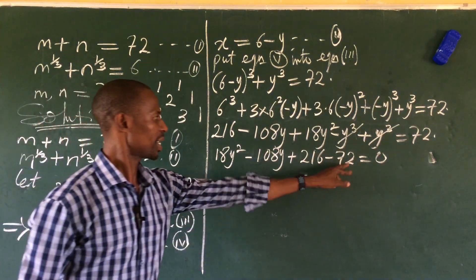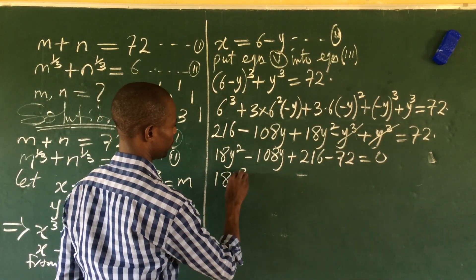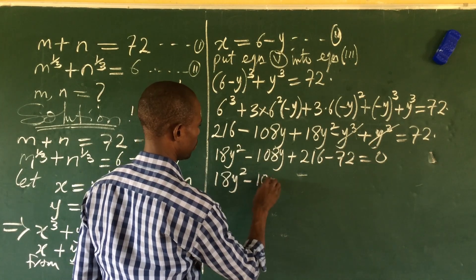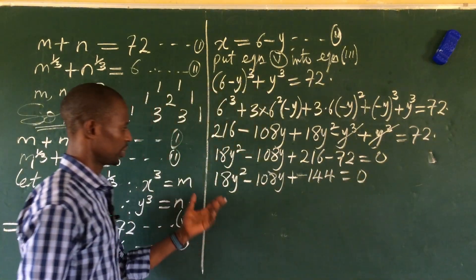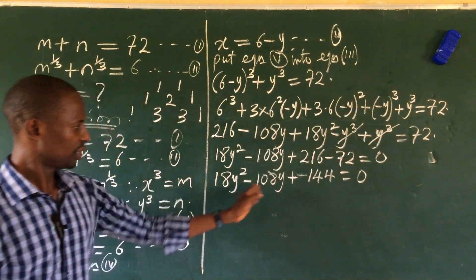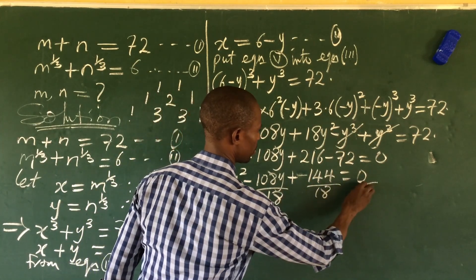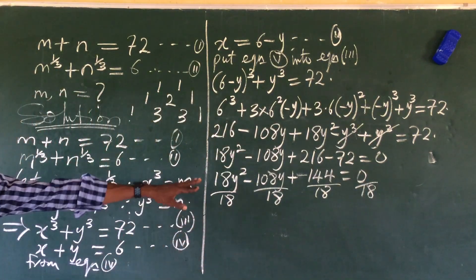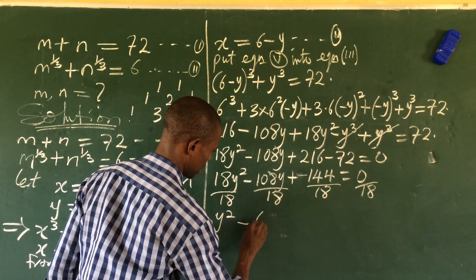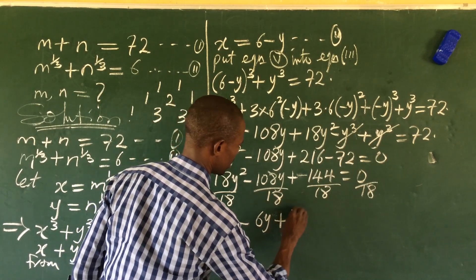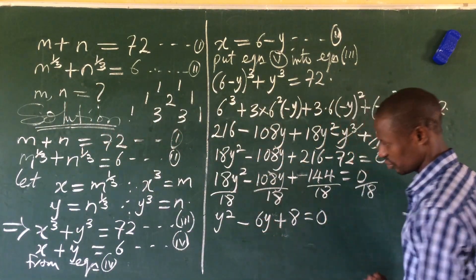Dividing through by 18, we get y² − 6y + 8 = 0. This is a quadratic equation that we can solve by factorization.